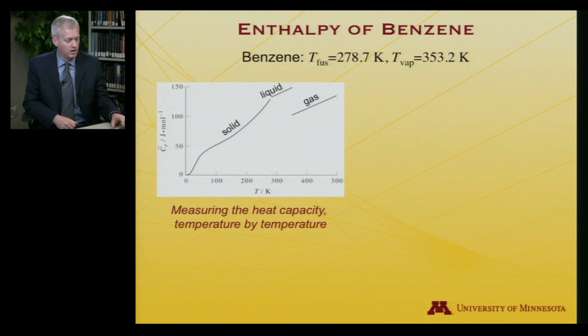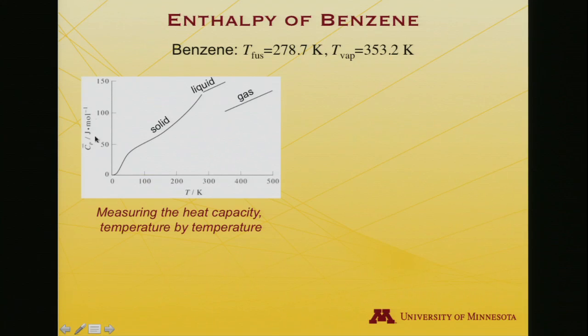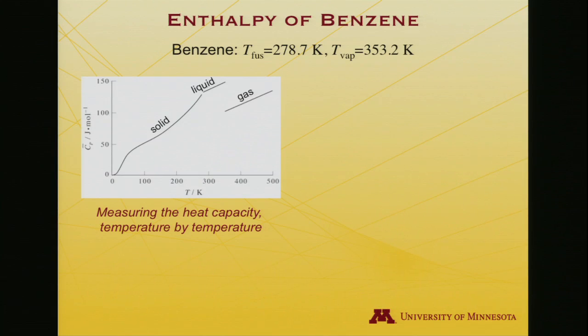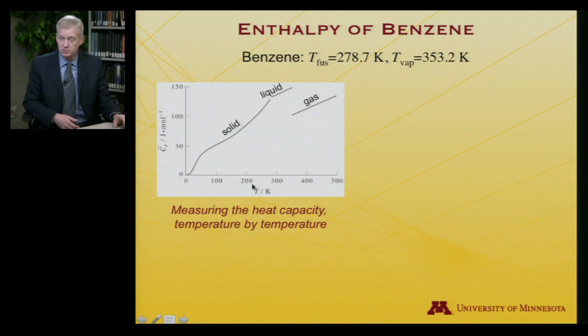You can measure the heat capacity degree by degree, so it does vary. Temperature is on one axis and constant pressure heat capacity on the other. At absolute zero it takes very little energy, and as temperature rises it takes increasingly more energy to raise the temperature, because energy flows into more accessible modes — rotations and vibrations begin picking up energy rather than translation, which increases temperature. We rise in temperature until we hit the melting point, where heat capacity goes infinite; we measure the heat of fusion separately, then measure the liquid, and then the gas.